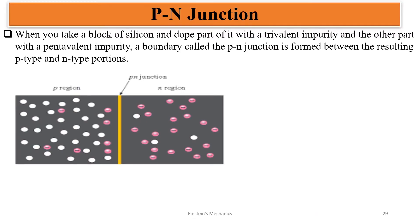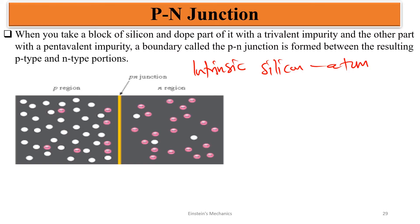When you take a block of silicon, in order to create the P-type semiconductor and the N-type semiconductor, we consider a silicon atom in its intrinsic state — that is its pure state. Then we dope it with either a trivalent impurity, and if we want the N-type, we also dope it with a pentavalent impurity.